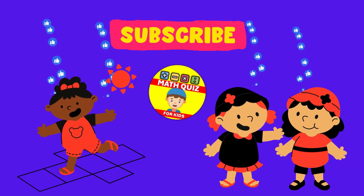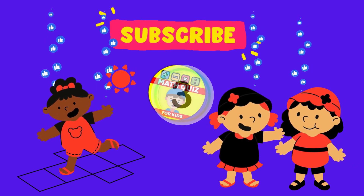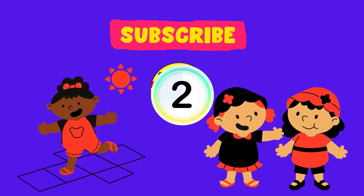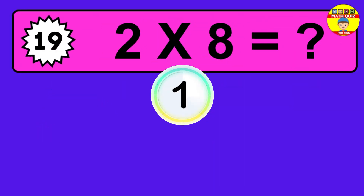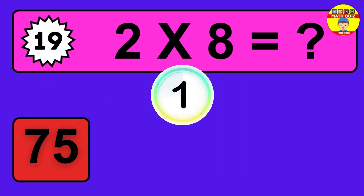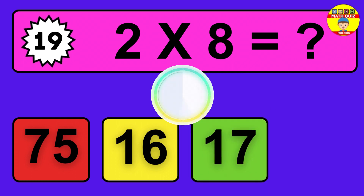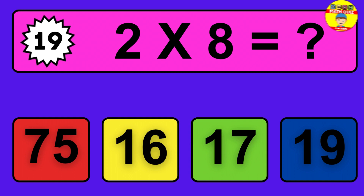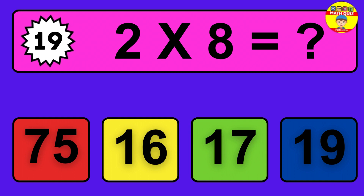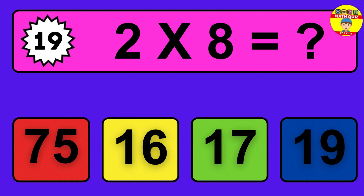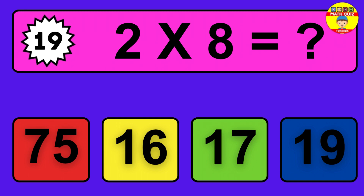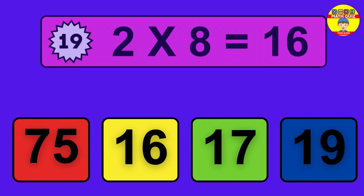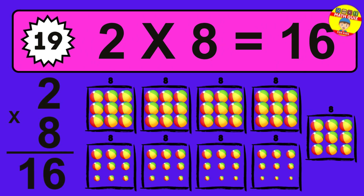Question 20. 9 times 2 equals what? The answer is 9 times 2 is 18. To calculate, we have 9 groups with 2 balls each one. So how many balls do we have? 18 balls.